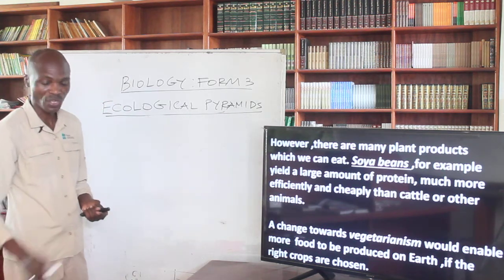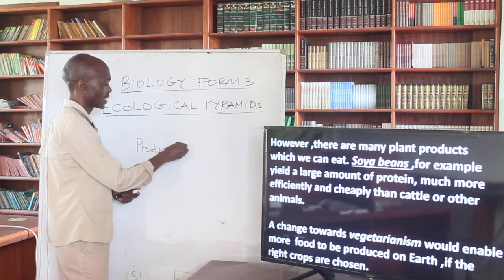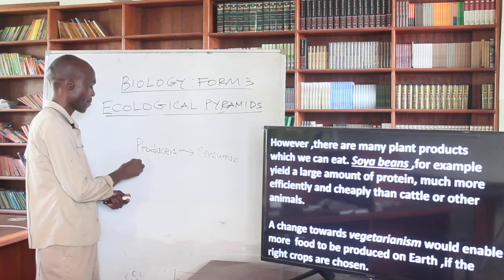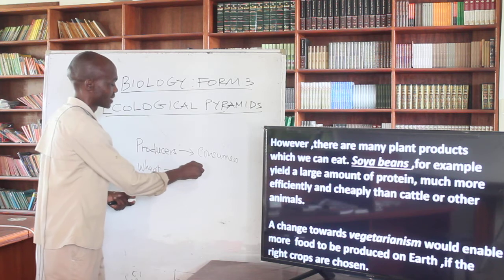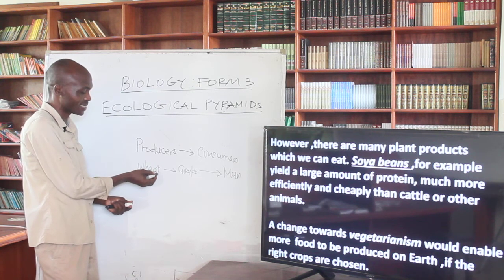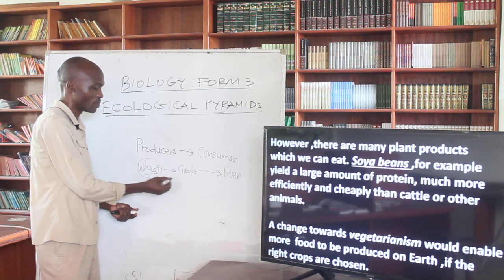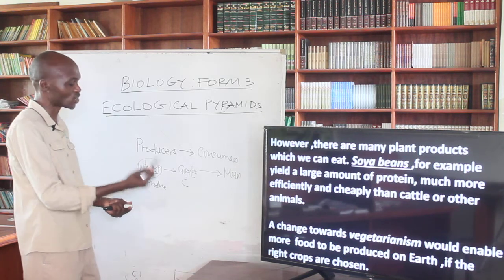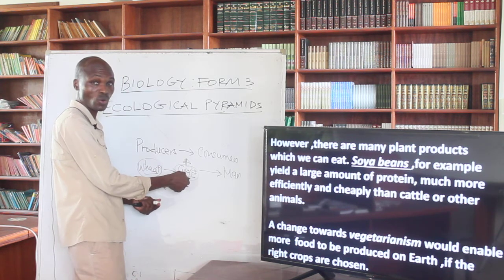Simply, the point we are trying to put across is that if you look at the food chain with its producer and consumers — for example, wheat being fed on by goats, and man feeding on that — the amount of energy present in wheat is far higher than the energy you obtain when you consume meat products or milk products from the goats. If you consume wheat directly as the primary producer, you get more energy than when it passes through an animal consumer first.